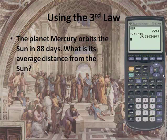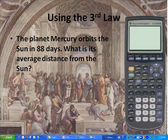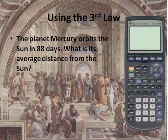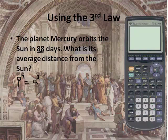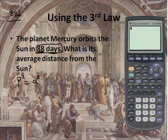Let's do this as an example. Get the calculator showing. So if we have this equation, P squared is equal to A cubed. Mercury travels around in 88 days. We want to do distances, and this is in days, so that's a little confusing. What I want to do is take 88 days and divide it by 365 days — that's how many days there are in a year for Earth. We're going to compare it to Earth.